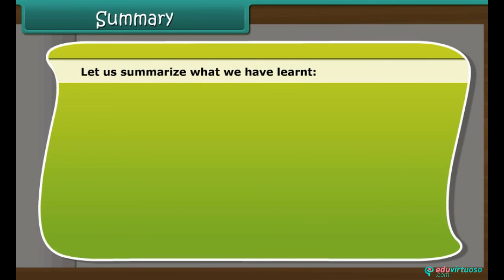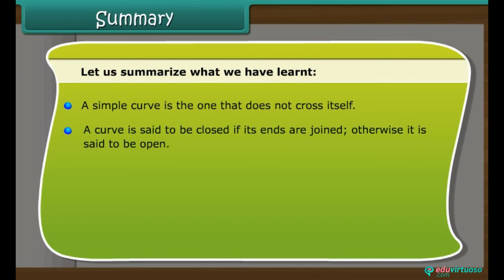Let us summarize what we have learned. A simple curve is the one that does not cross itself. A curve is said to be closed if its ends are joined. Otherwise, it is said to be open.